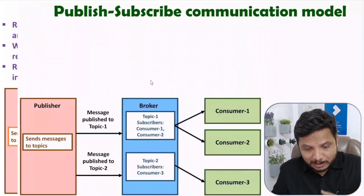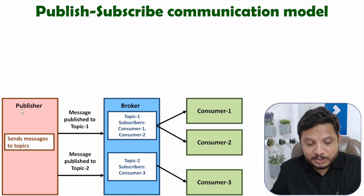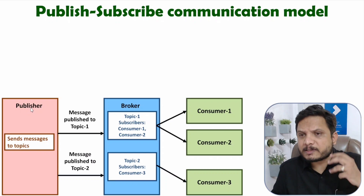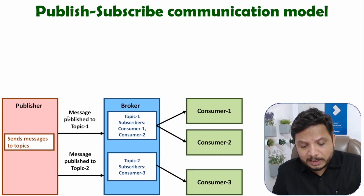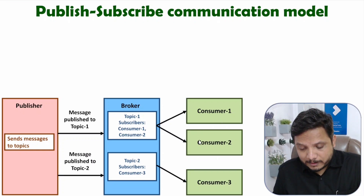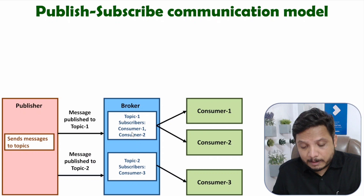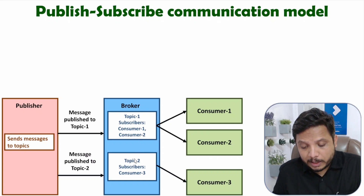Now the next communication model is the publish-subscribe communication model. Here we have publishers — a publisher can publish many topics, and there can be multiple publishers publishing many topics. A broker will be arranging all the topics; the broker is an intermediary node. There are also consumers who subscribe to topics. Here the broker has published topic 1 and topic 2 in front of consumers.